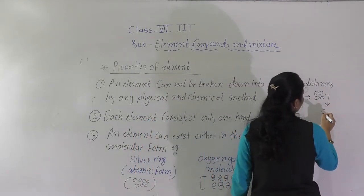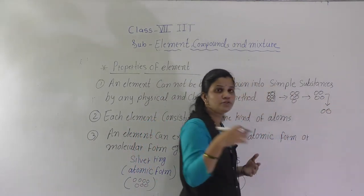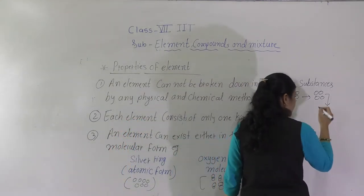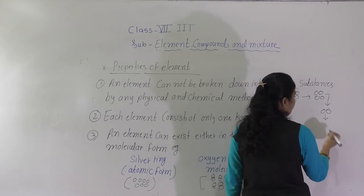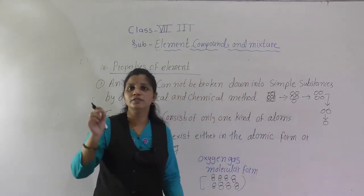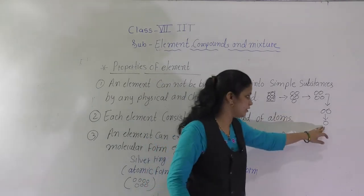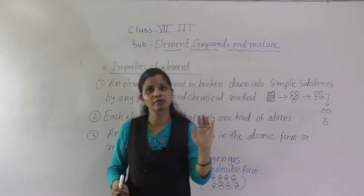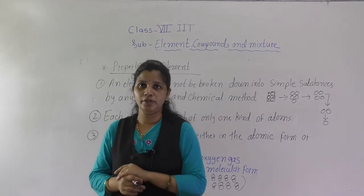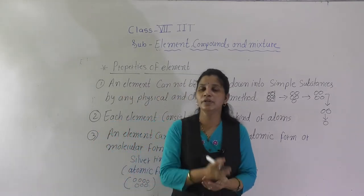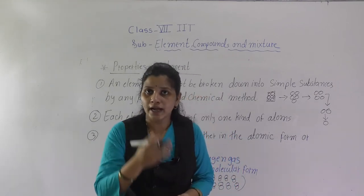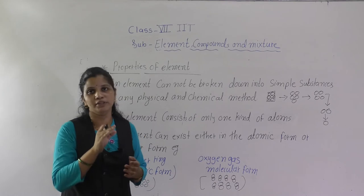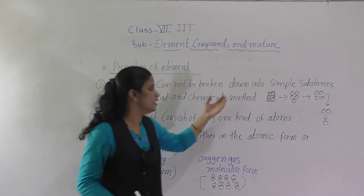Again if you try to break it, you will get 4 atoms of the same element, gold. Again breaking gives you 2 atoms of gold, and continuing this process you get at last the one smallest unit of atom. Means if you are breaking gold, you will not get silver — it will not happen. You will always get the gold element only.